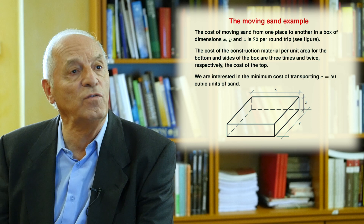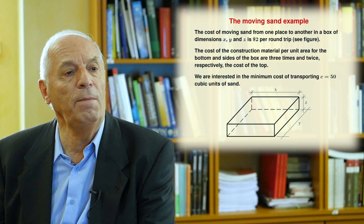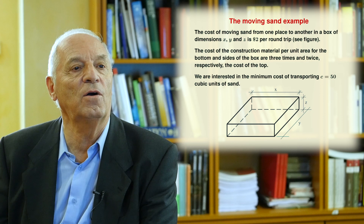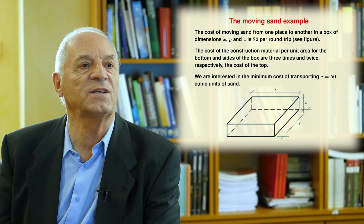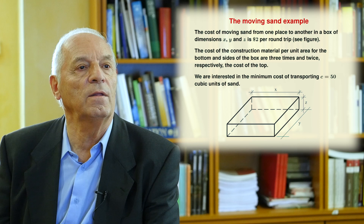Another example is the moving sand problem, in which you have to design a box to transport a given amount of sand. If the box is very big, it will cost a lot of money, but the price of transportation is $2 per trip independently of the size of the box. The problem is to balance the cost of building the box with the cost of transportation.